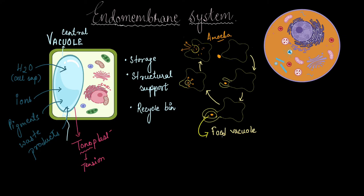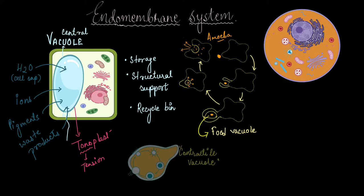All right, so this was food vacuole. Now let's move on to another kind of vacuole which is called the contractile vacuole, and we get to see them in single cellular organisms like amoeba and paramecium.